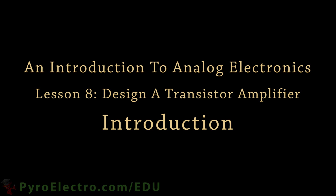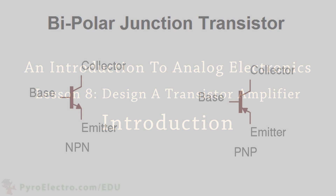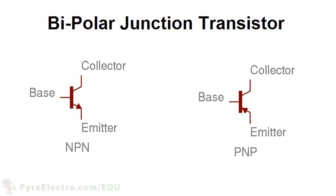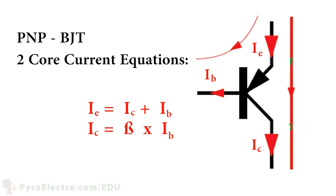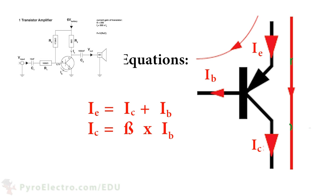In the introduction to Modern Electronics course, we briefly explored some of the finer details about transistors, like the two types of BJTs called NPN and PNP type transistors. In this lesson, we will take a look at how to build an amplifier using a BJT transistor.